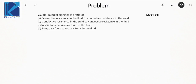Today I am going to solve the previous year GATE problems from the chapter free and forced convection. The first question is: Biot number signifies the ratio of — and students generally get confused between the significance of Biot number and Nusselt number.